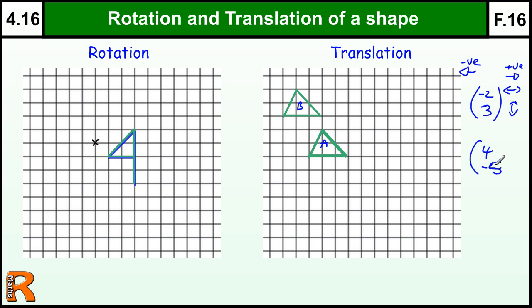Minus four, minus five. So the top one is how we move it across. So we need to move it across four. One, two, three, four.